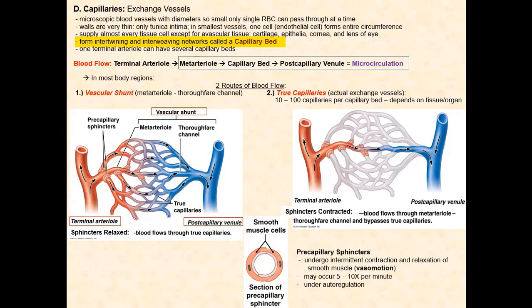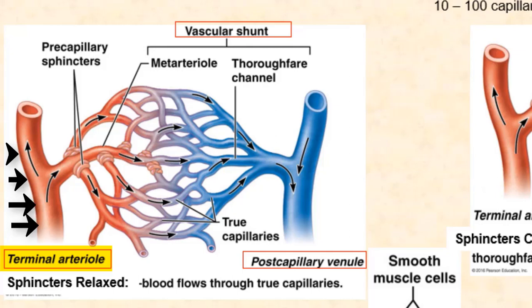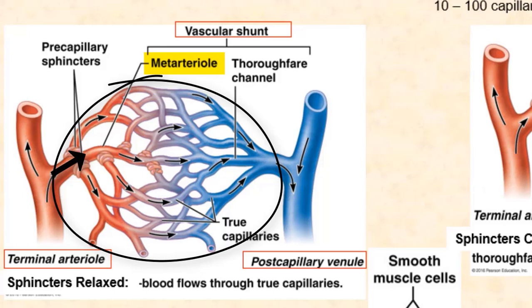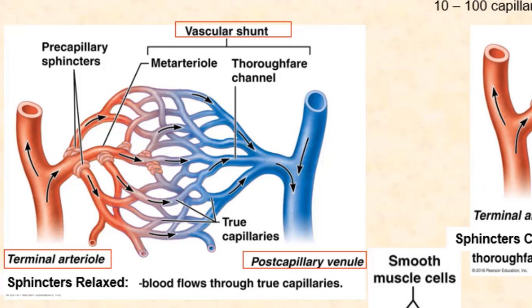Capillaries intertwine and interweave to form a network called a capillary bed. Any given capillary bed can have anywhere from ten to one hundred interwoven capillaries, depending upon the tissue and the organ. We have a terminal arteriole and a meta arteriole that directly branches off of the terminal arteriole. It is the meta arteriole that leads blood into the capillary bed. One terminal arteriole can have several meta arterioles that branch off of it, therefore supplying blood to several capillary beds.